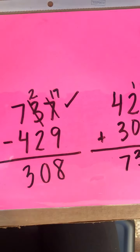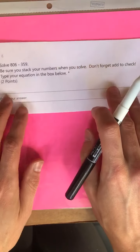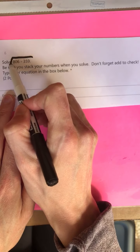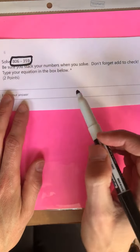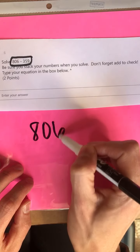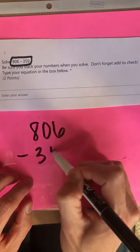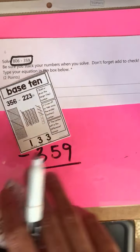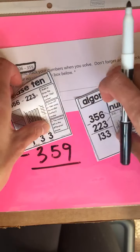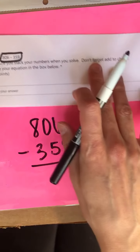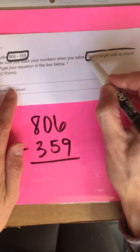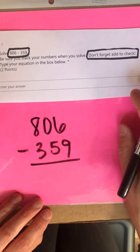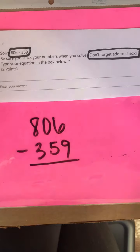Let's take a look at number six together. Number six says solve 806 minus 359. Again, you want to stack your numbers, choose one of your three strategies, and don't forget — when you're done subtracting, add to check. Pause your video, go ahead and solve number six, and when you're ready, press play.